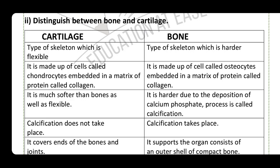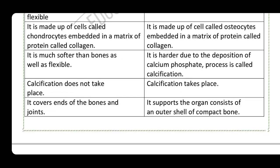Cartilage is made up of cells called chondrocytes embedded in a matrix of protein called collagen. Bones are made up of osteocytes and their protein is also collagen. Cartilage is much softer and flexible than bones. Bones are harder because of the deposition of calcium phosphate — a process called calcification.